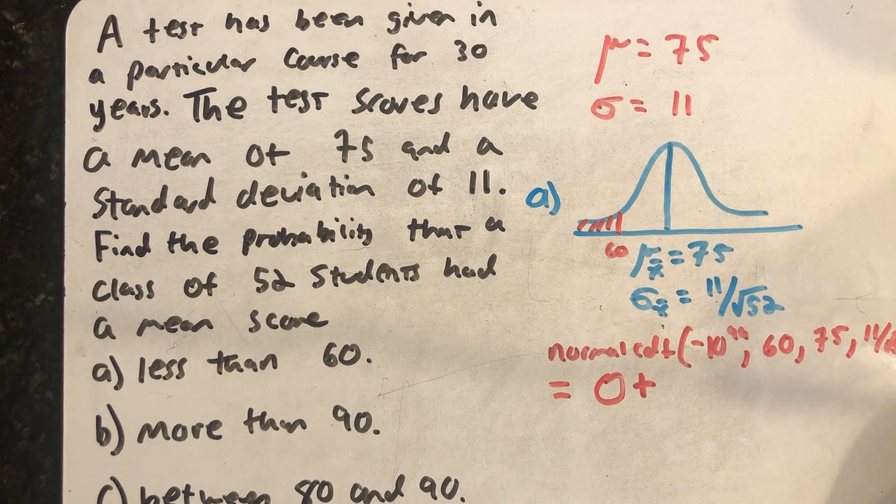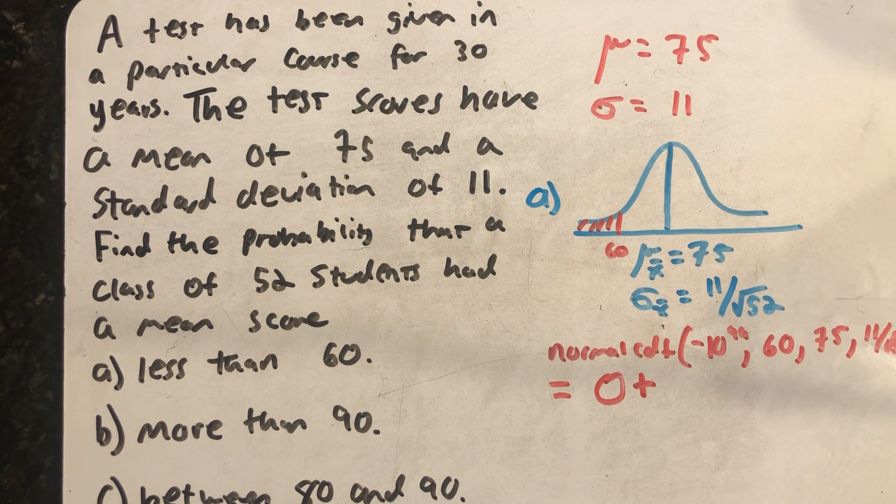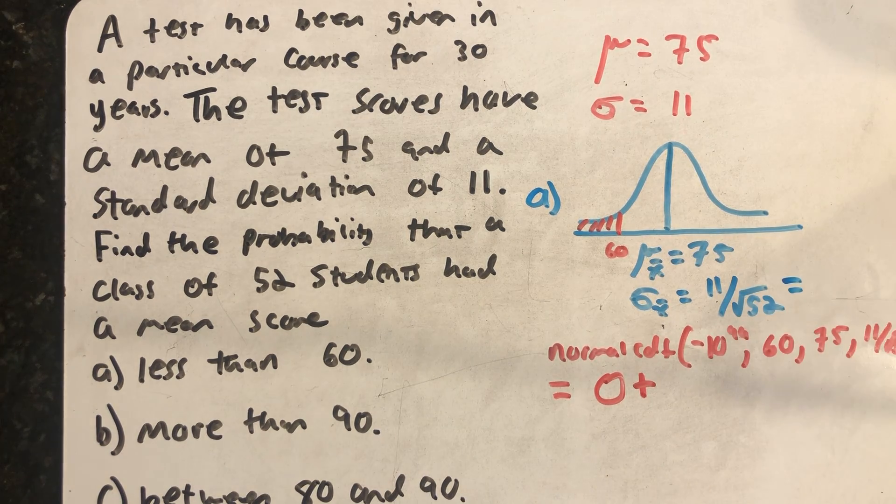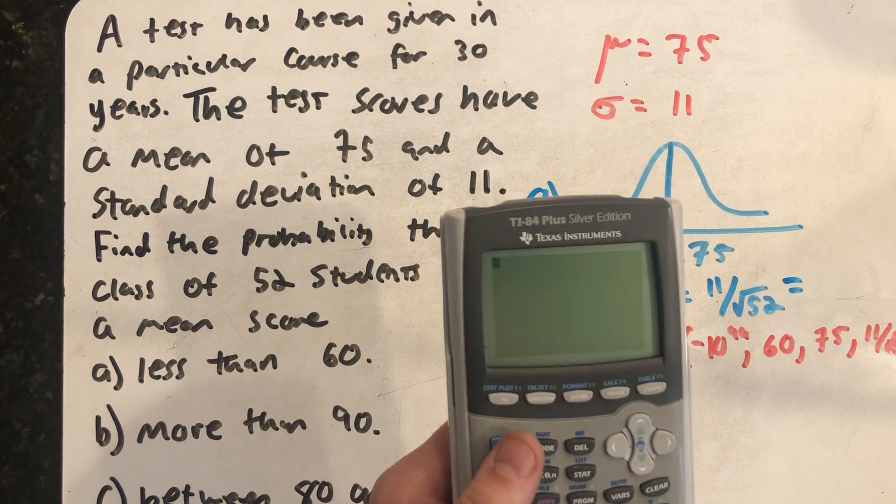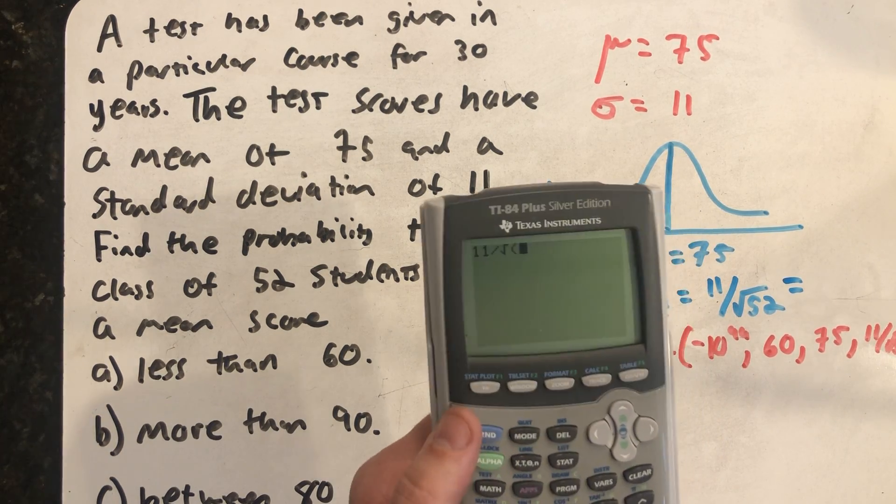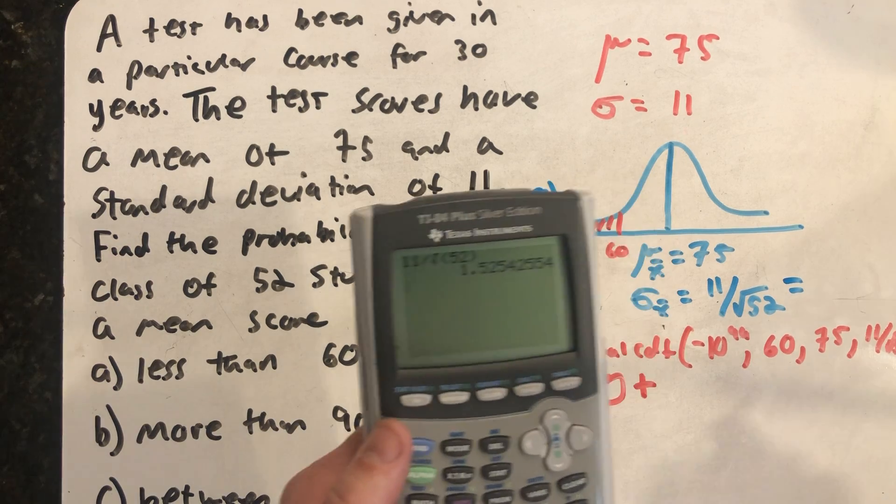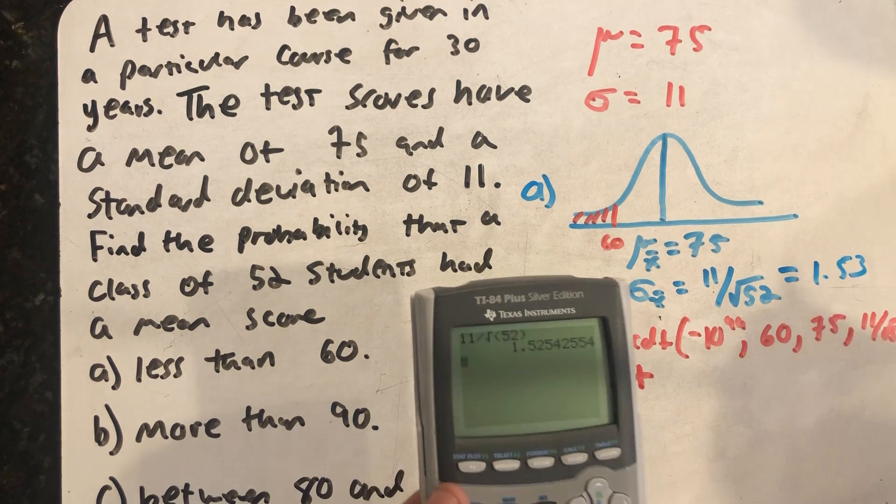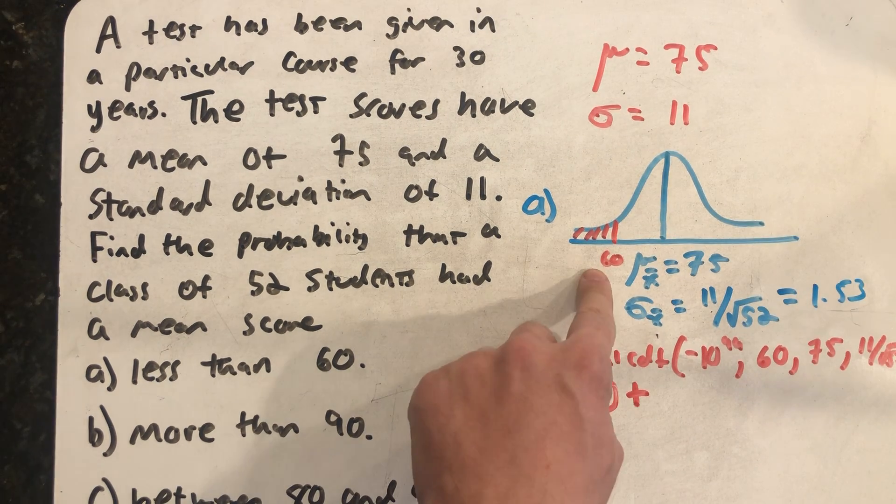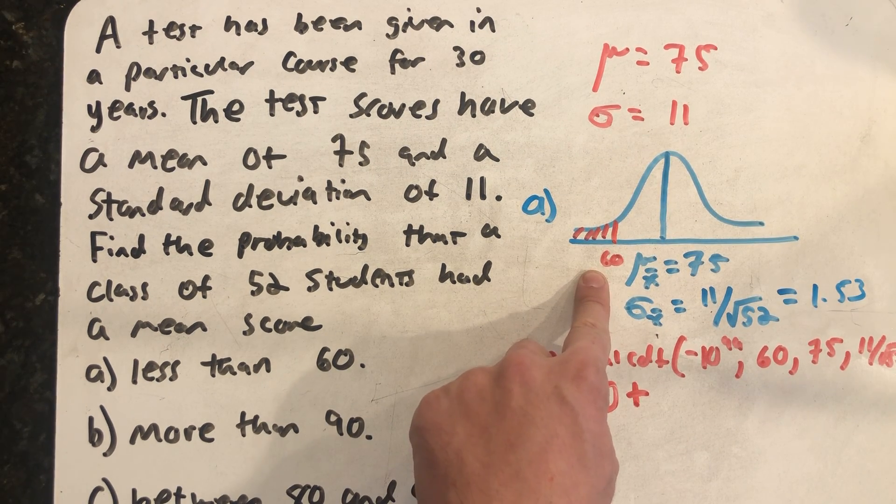Well, what's really going on here is that the variation in this distribution is very small. With a fairly significantly sized sample size here, 11 divided by the square root of 52 has a standard deviation of 1.53, making 60 very far away from the mean.